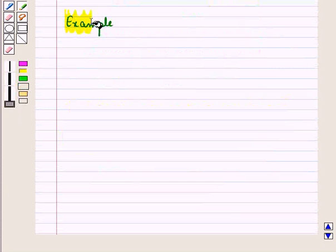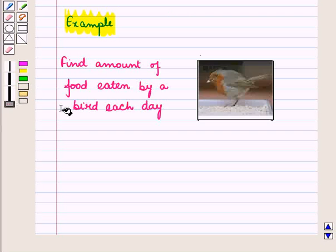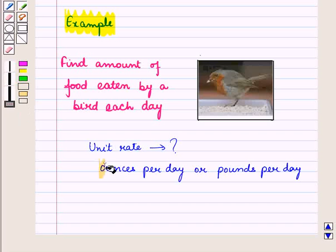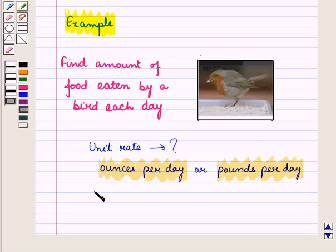Now, let us see one more example. Suppose we want to find amount of food eaten by a bird each day. Which unit rate we will use here? Ounces per day or pounds per day? The amount of food eaten by a bird will not be very large.